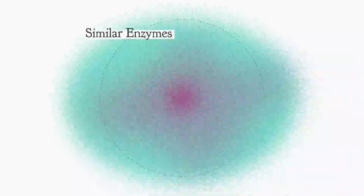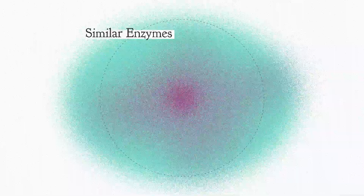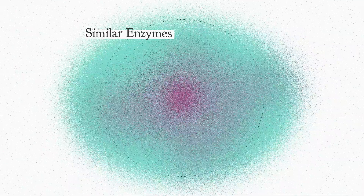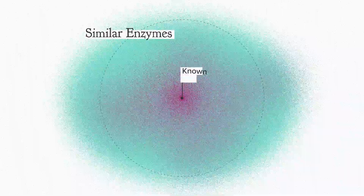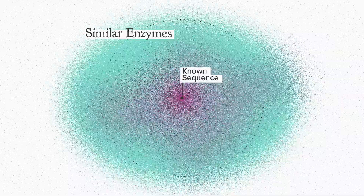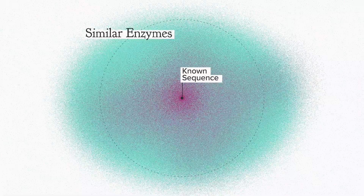The upshot of these historical constraints is that a certain mental model took hold. We envision enzyme space as a cloud of similar sequences. Usually in the center of this cloud is a single enzyme that just happens to have functional data associated with it.